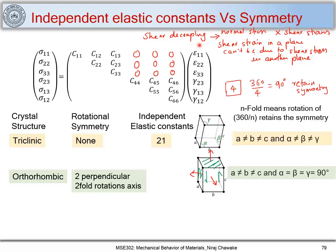The shear decoupling principle states that if I have σ₂₃ applied with this kind of symmetry, it will cause only γ₂₃; it will not cause γ₁₃ or γ₁₂. Because of this, 3 of those components turn out to be 0. So in total, counting these 6 components and these 3 components, we need 9 independent elastic constants to correlate stress components to strain components for an orthorhombic crystal structure.